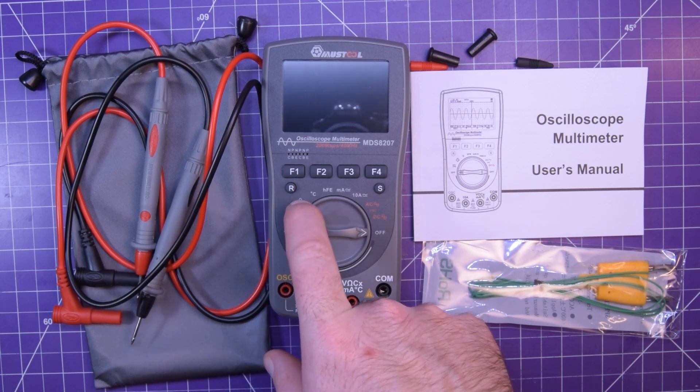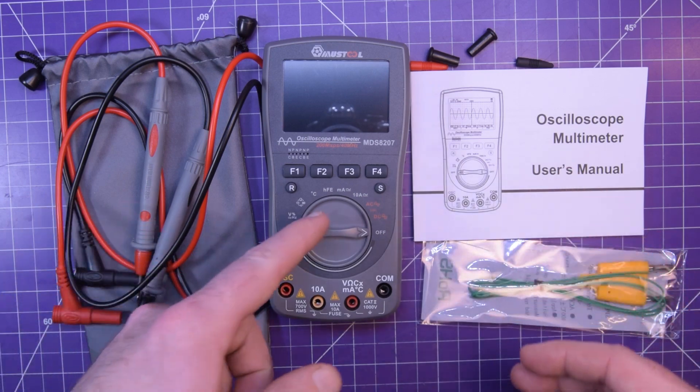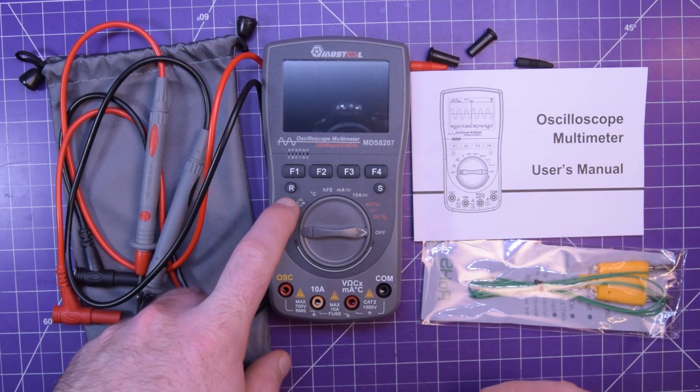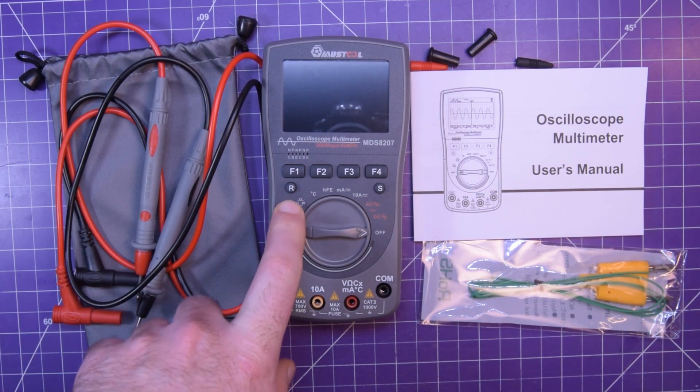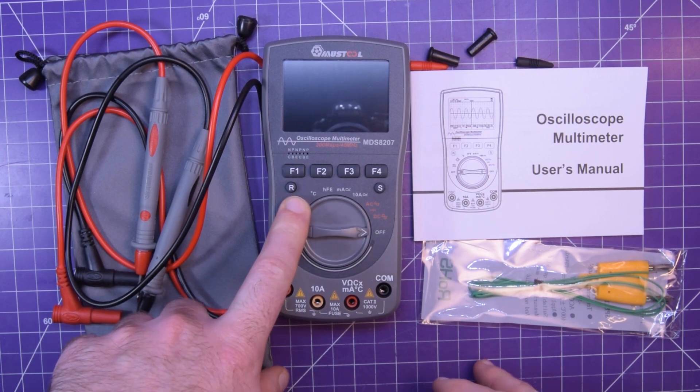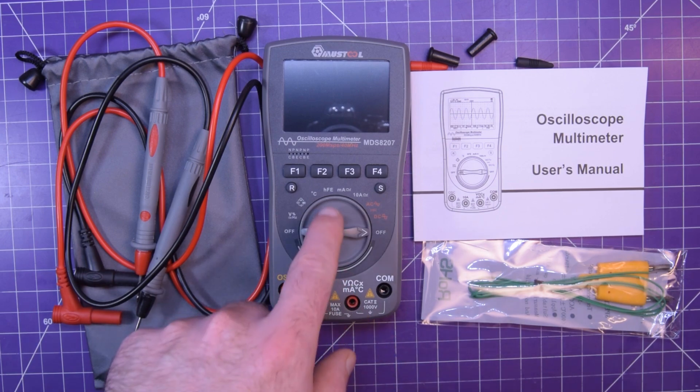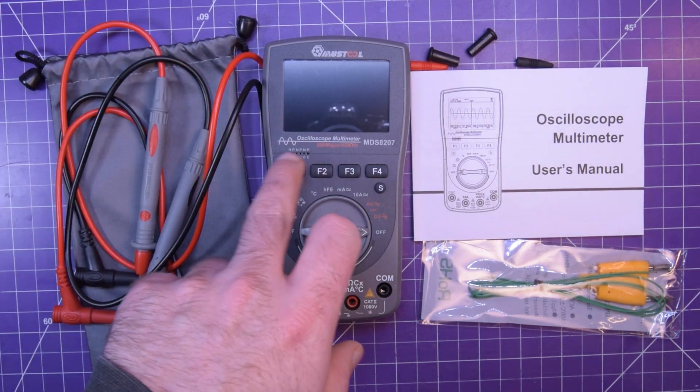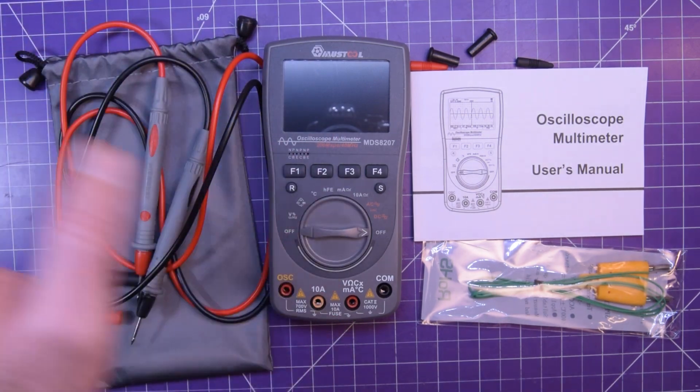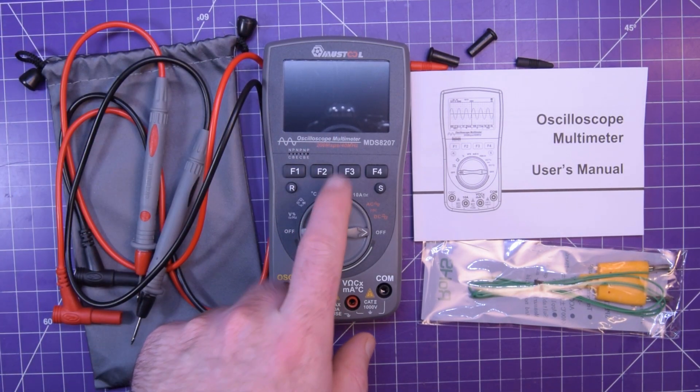That's fine by me because I'm in Canada, degrees C is what we use, but Americans which is a fairly large market, much bigger than Canada, they need Fahrenheit so it's an interesting omission. They have the HFE, that's a transistor gain from up here. I don't think that's necessary these days.